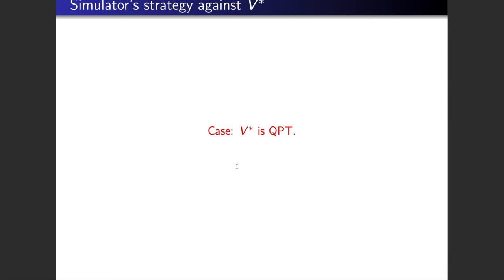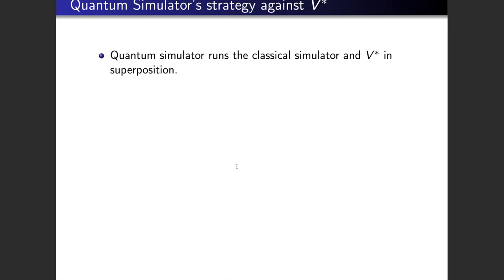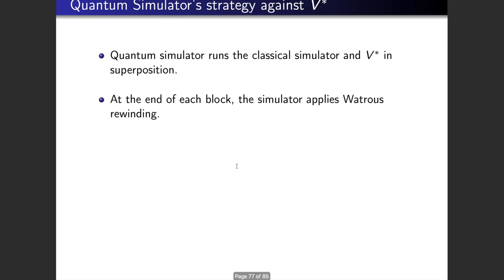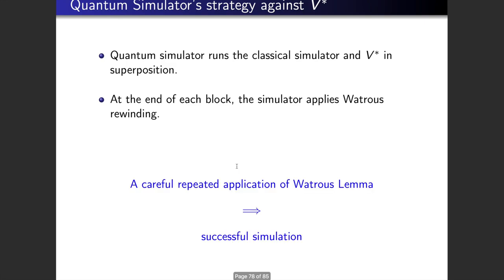When the verifier is QPT, the quantum simulation strategy is simple: the quantum simulator runs the classical simulator and the verifier in superposition, without measuring anything except at the end of each block. At the end of the block, it measures and decides to rewind, employing the rewinding strategy proposed by Watrous. A careful repeated application of the Watrous lemma implies a successful simulation against a quantum verifier.